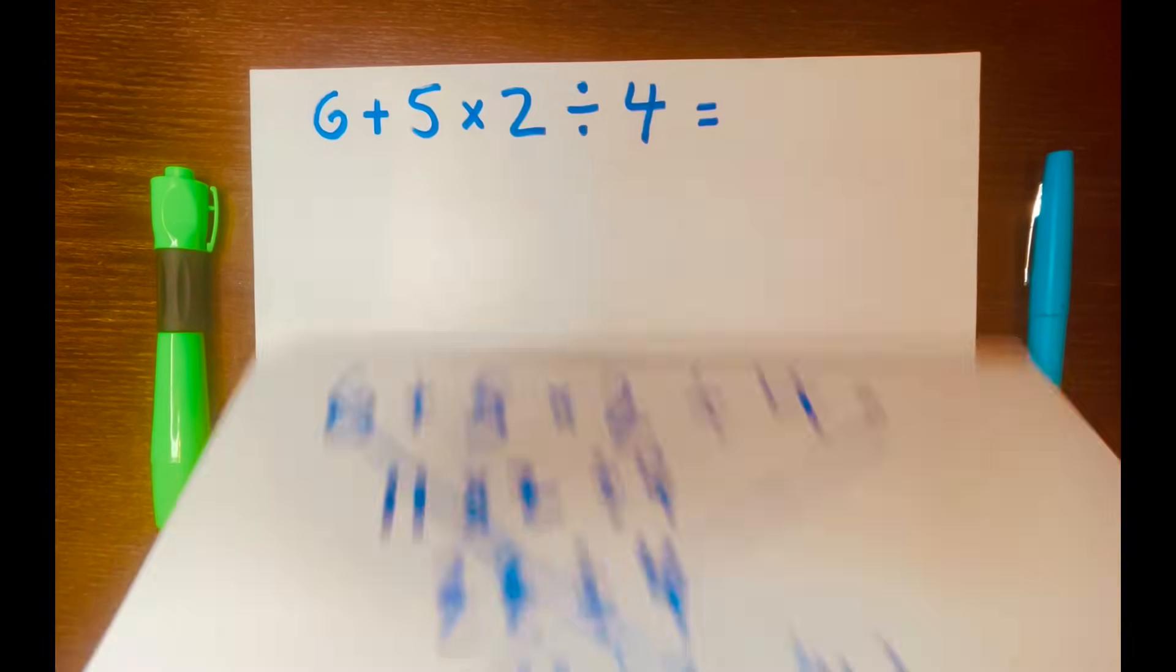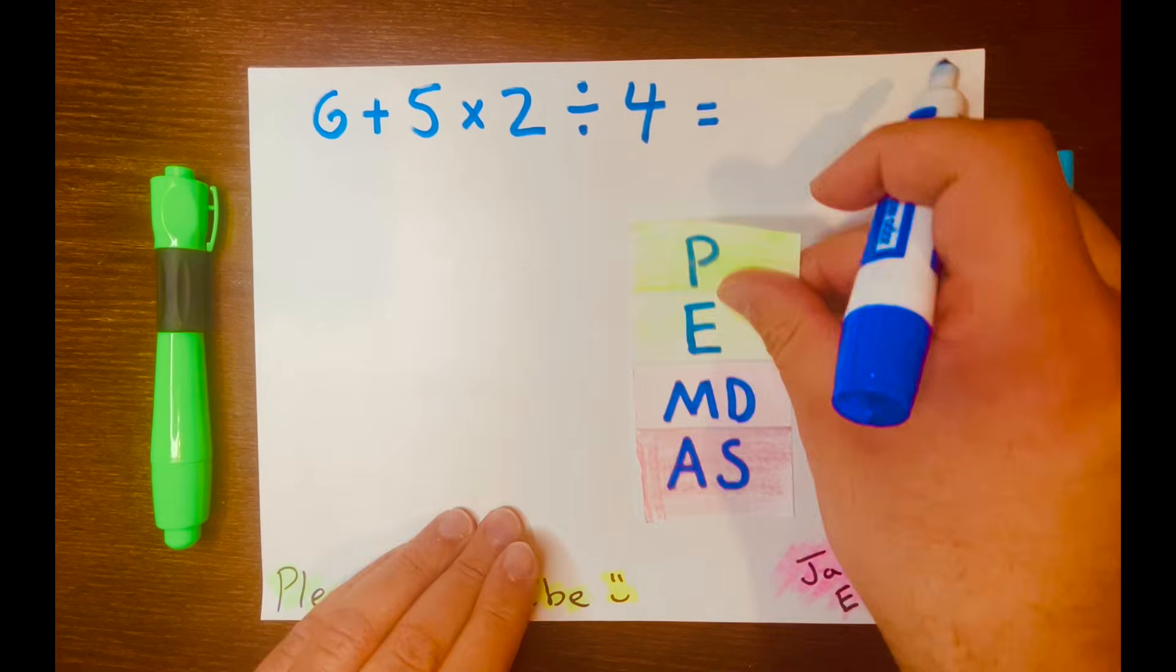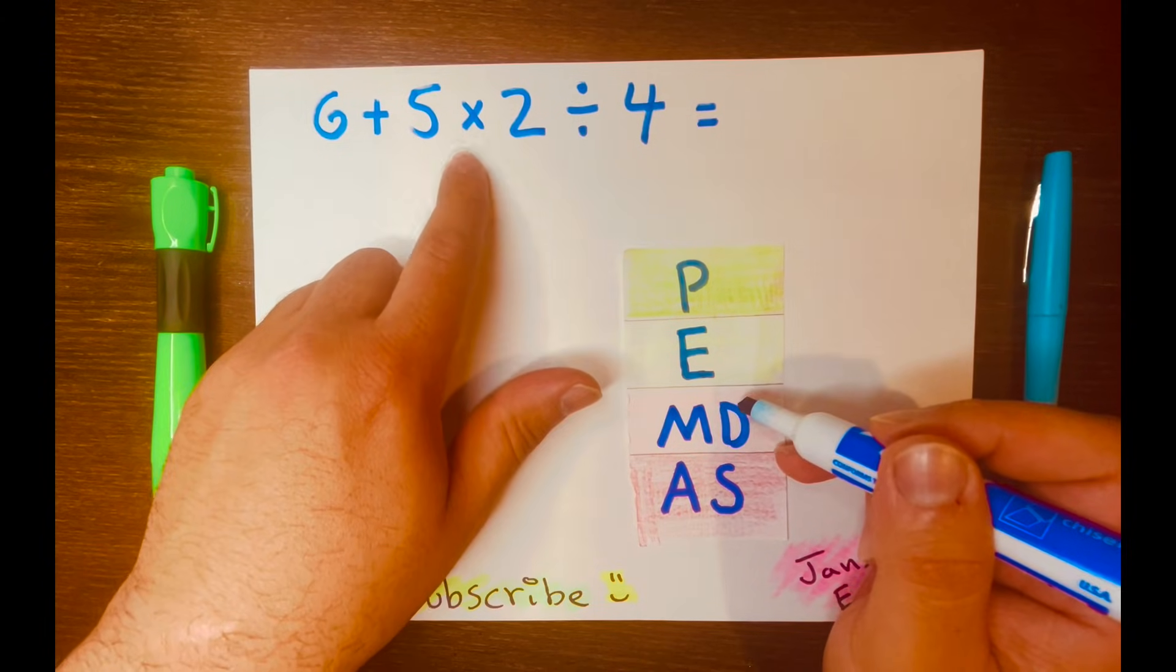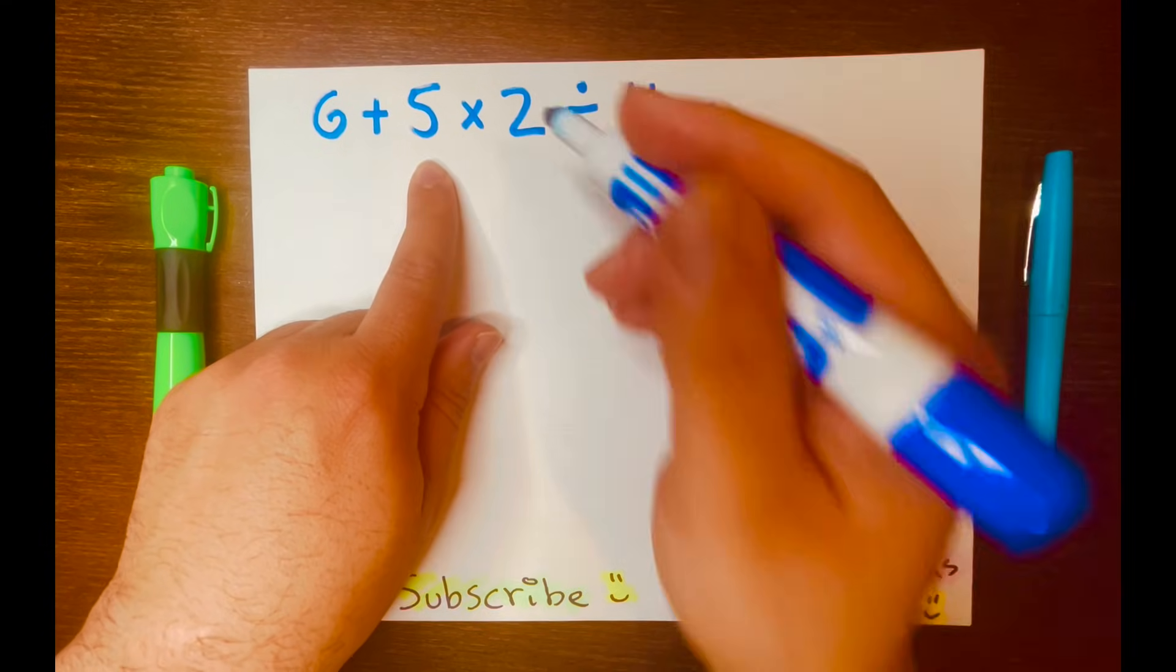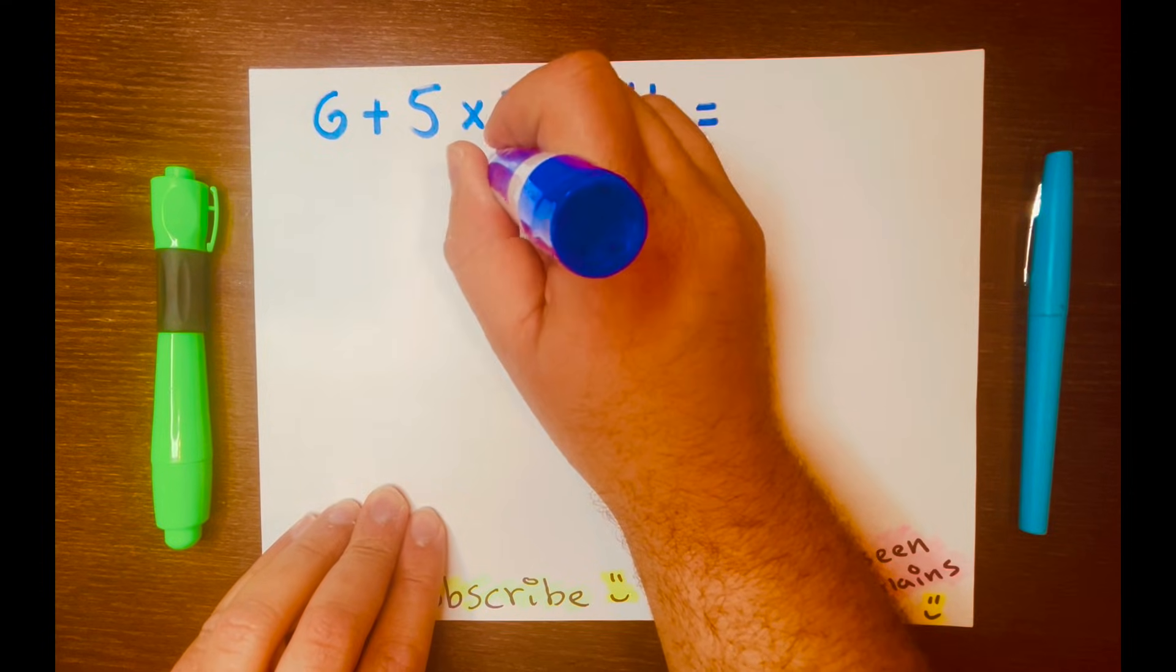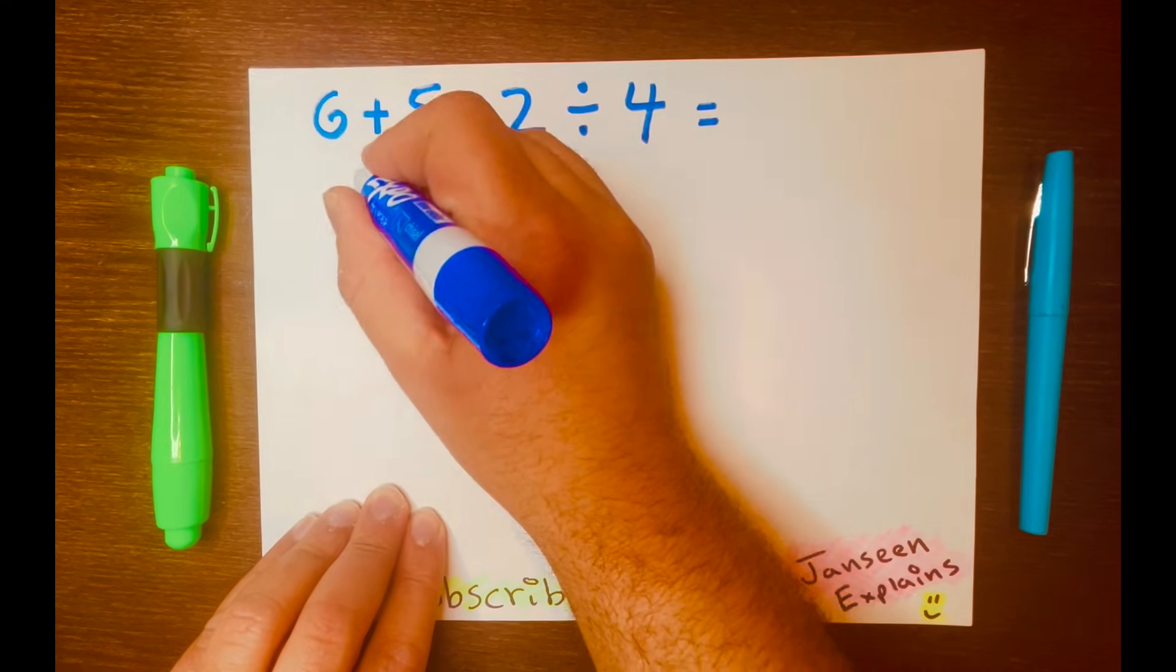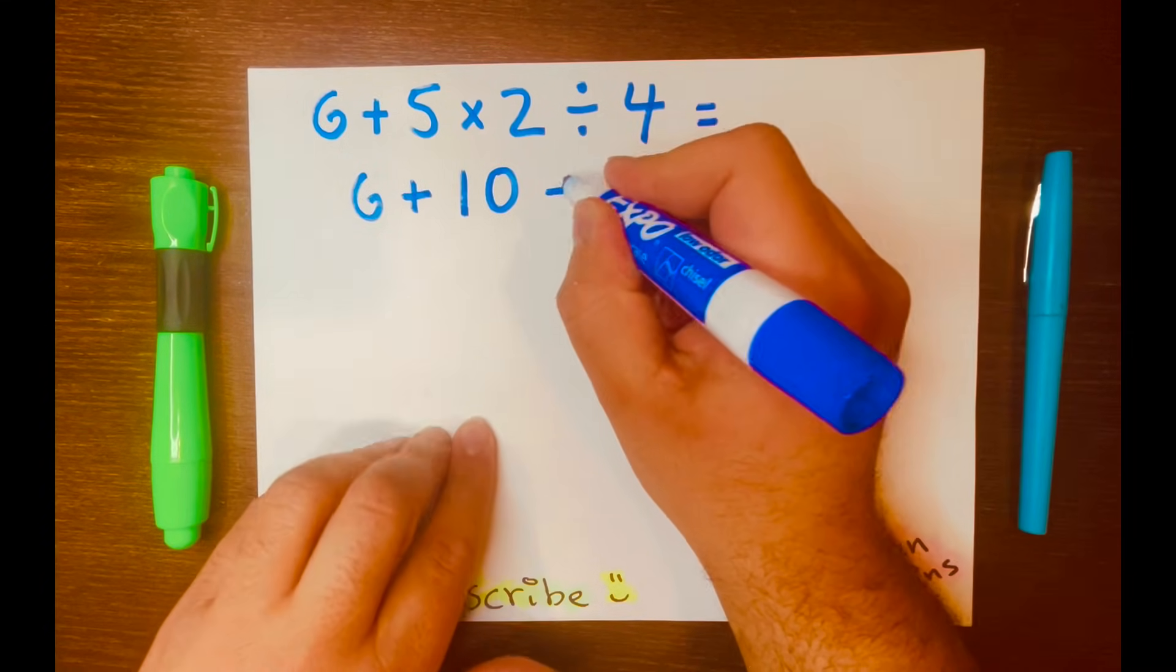Let me show you how to solve this math problem correctly. They're not using PEMDAS. PEMDAS is telling me that multiplication will go first, not addition. So 5 times 2 is 10. Then I'll bring down the 6 plus, and then I'll bring down the division symbol and the 4.